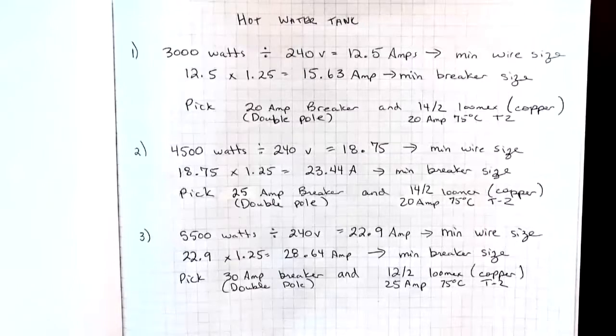It means that each element is 3000 watts, but they can never come on at the same time. So when we're calculating our wire and breaker size, we use just the wattage of one element.